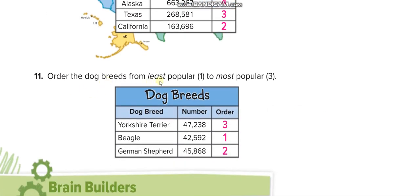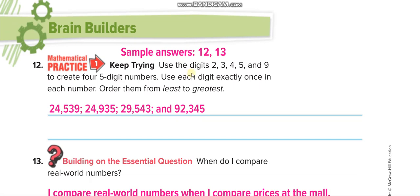Order the dog breeds from least popular to most popular. The least popular first: 42,000 gets number 1, then 45,000, then 47,000. Next activity: use only the digits 2, 3, 4, 5, and 9 to create four five-digit numbers. Each number must be five digits long, and you can use each digit exactly once within each number — you cannot repeat a digit in the same number.